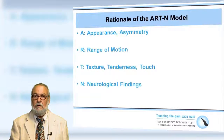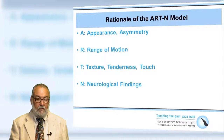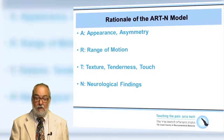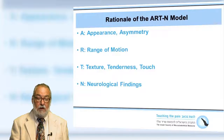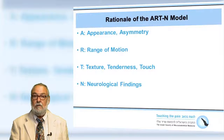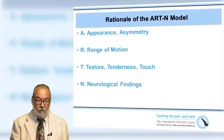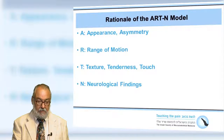We use a model called the ARTN model. A refers to appearance or asymmetry — does the right side equal the left side, and if not, what are the differences and are they important? R is the range of motion. T would be the texture, tenderness, or touch. And N will refer to the neurological findings which will complement our examination.